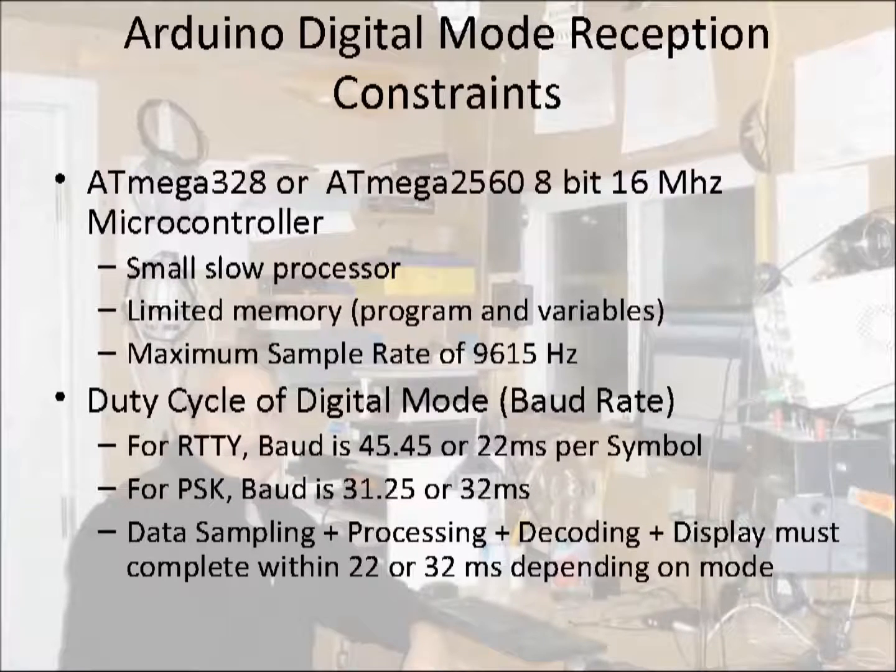For RTTY, the time between bits is 22 milliseconds. That is, the mark or space frequency is on for 22 milliseconds and must be detected and processed within this time. For PSK, the bit time is 32 milliseconds. This means that the phase of the carrier is shifted or not shifted every 32 milliseconds.